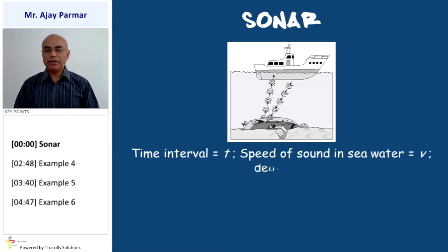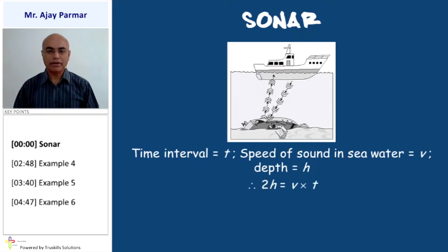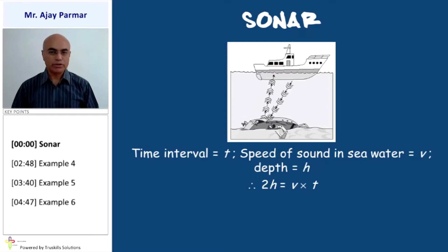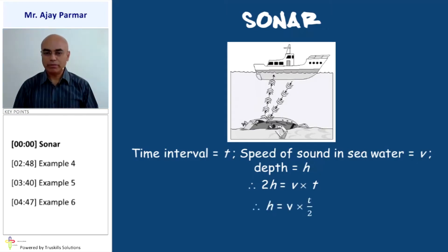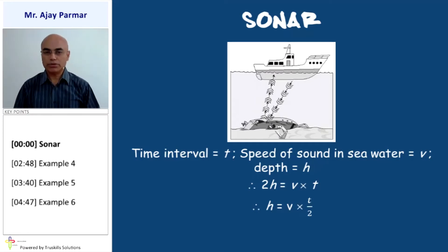If we denote the time interval as t and the speed of sound in water — say sea water — as v, and if we want to find out the depth, that can be done very easily: 2h = v × t. Why 2h? Because the sound goes down and comes back, so one height going down and one coming back. Therefore the depth h = (v × t) / 2. This is how we find the depth of the sea, lakes, or the position of a rock or sunken ship inside the sea.